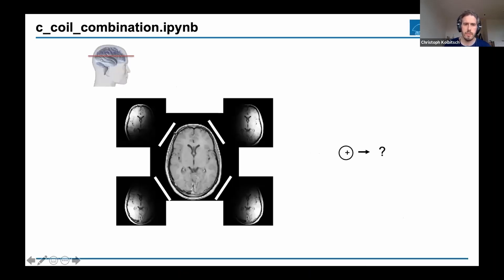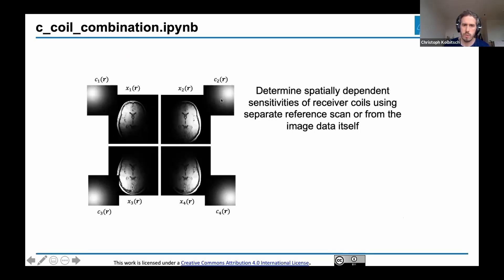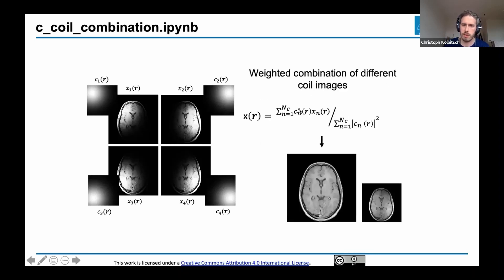In the notebook, we looked at different coil images as an example for a brain image with four different receiver coils. Each creates a k-space, and each k-space reconstructed shows a different part of the image because it's only sensitive to a certain part of the brain. We looked at how to combine those by calculating coil sensitivity maps, which give spatial information about where each coil is sensitive.